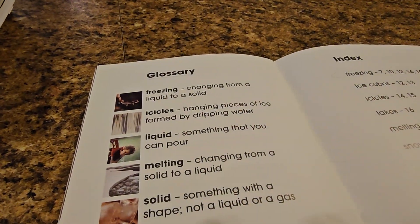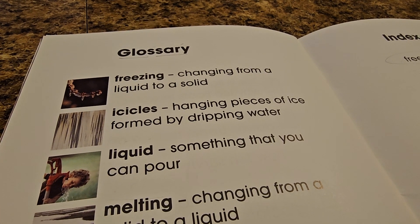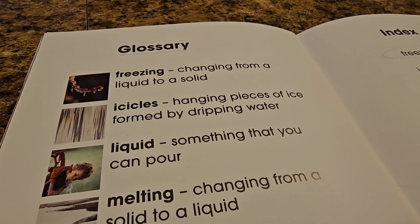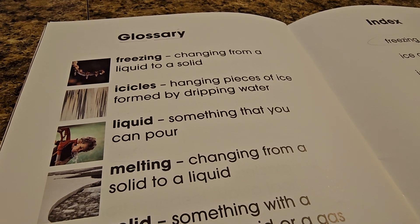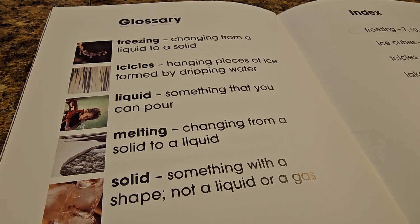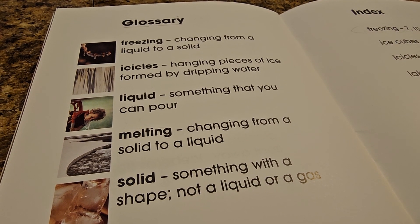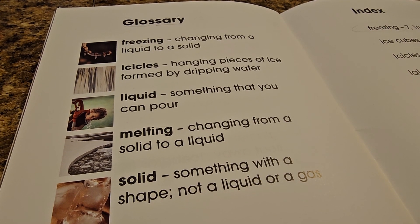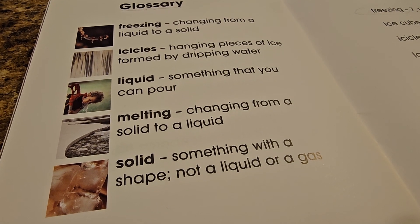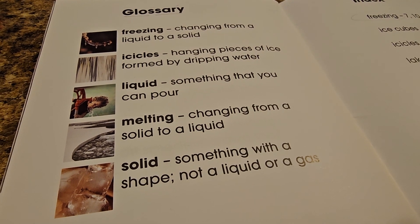There's a glossary of terms here. Freezing means the change from a liquid to a solid. Icicles are hanging pieces of ice formed by dripping water. Liquid is something that you can pour — it takes the shape of its container and will always be level. Melting is changing from a solid to a liquid; you can melt ice, but you can also melt metal — it all depends on the temperature and the material. Solid is something with a shape — it's not a liquid, nor a gas, but a solid.